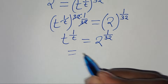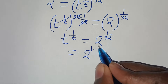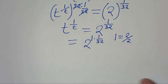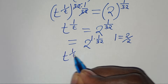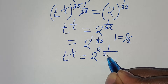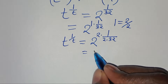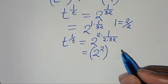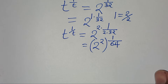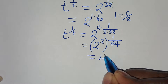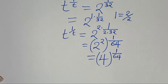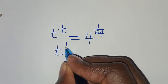We can express this as 2 to the power of 1 times 1 over 32, whereby 1 is the same as 2 over 2. So we have t to the power of 1 over t, equal to 2 raised to the power of 2 times 1 over 2 times 32. This means we have 2 to the power of 2, raised to the power of 1 over 64, which is 4 to the power of 1 over 64.